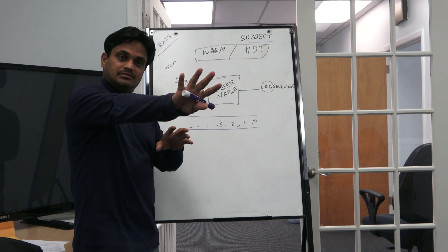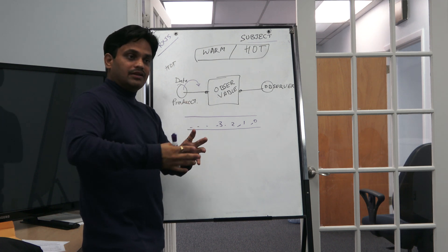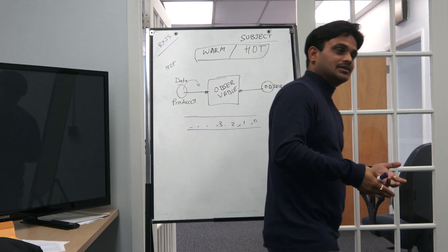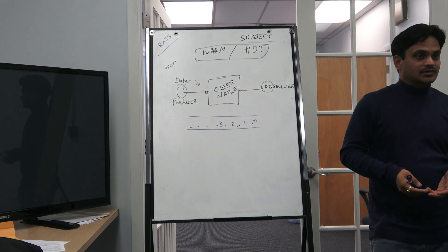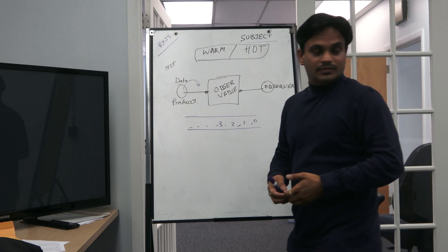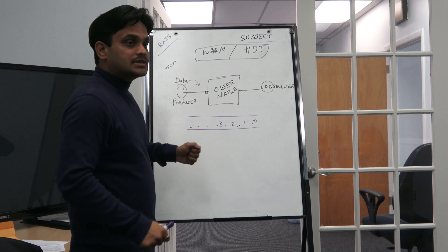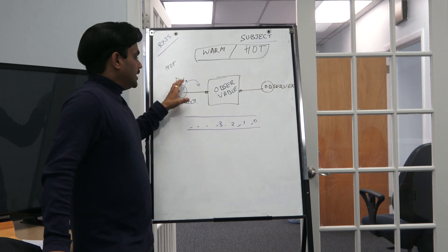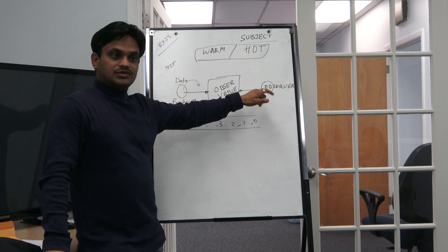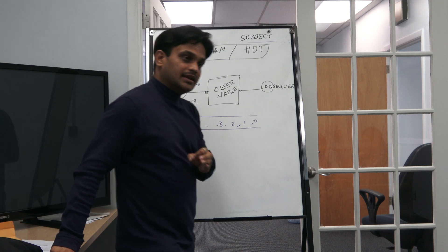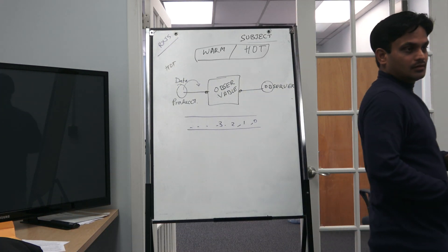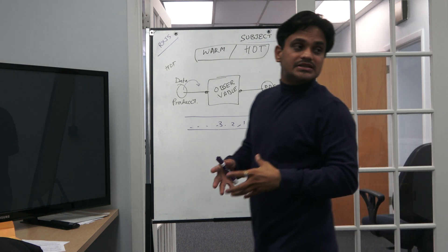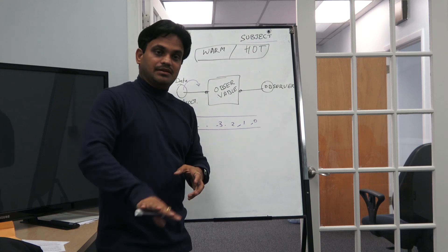A good example of a pure hot observable is a radio station. Regardless of whether people are listening, the radio starts at 9 a.m. and continues till 10. If you join at 9:10 or 9:15, you receive whatever is current — you don't receive what was said earlier. Hot observable means it doesn't depend on subscribers.